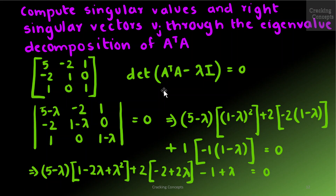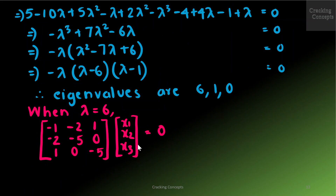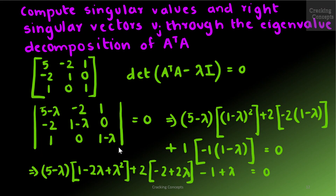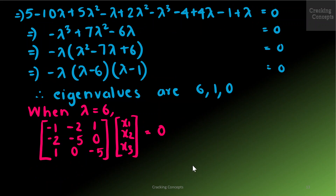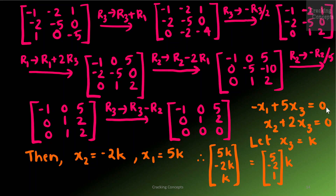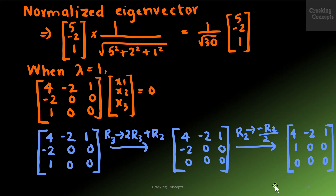To find the eigenvectors I substitute these values. For the first case when λ = 6, I substitute λ = 6 and perform Gaussian elimination on the matrix, finally obtaining two equations. Substituting x3 = k gives x2 = −2k and x1 = 5k, so the eigenvector is [5, −2, 1]·k. To normalize, I divide by √(5² + 2² + 1²) = √30, giving the normalized eigenvector (1/√30)[5, −2, 1].